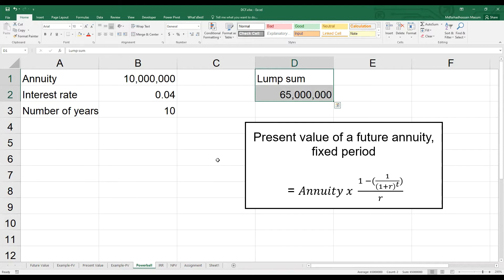We see that at 4% interest rate, $10,000,000 every year for 10 years is $81,000,000 today. I will definitely go for the installment option.